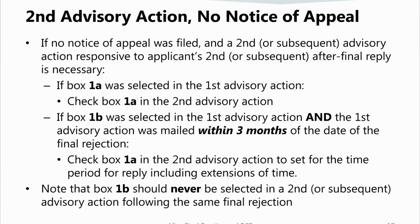If no notice of appeal was filed and applicant files a second reply in response to the final office action, and box 1A was selected in the first advisory action, you should again select box 1A. If box 1B was selected in the first advisory action and the first advisory action was mailed within three months from the date of the final rejection, you should check box 1A in the second advisory action. Note that box 1B should never be selected in a second advisory action that follows the same final rejection.